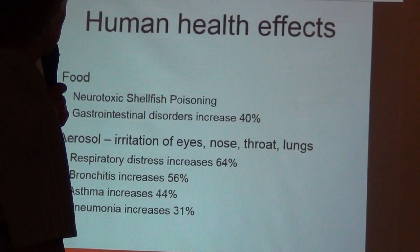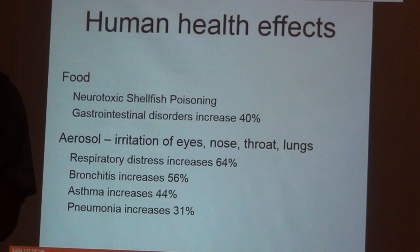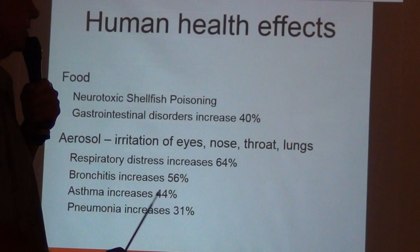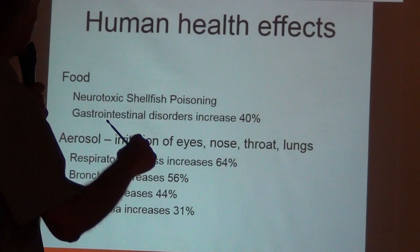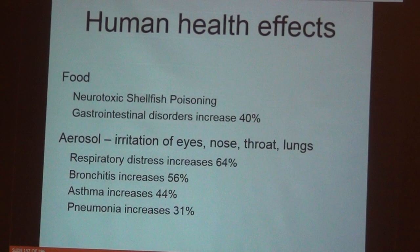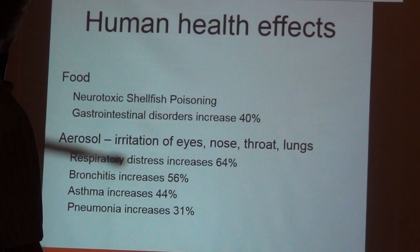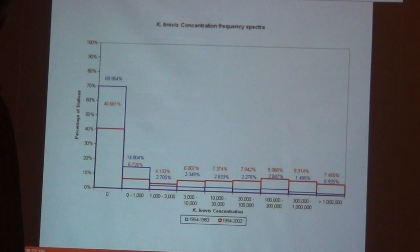What are the health effects of red tide? It's called neurotoxic shellfish poisoning because if you ate the shellfish you would get very sick, though that happens very rarely now because the state does a good job of shutting down shellfish harvesting when there's red tide around. If you look at hospital records during times of red tide, you see about a 40% increase in people going to the hospital for gastrointestinal disorders. The major effect these days is that the toxin gets into the air as an aerosol — it irritates your eyes, nose, throat, and lungs. Hospital records show about a 50% increase in people going to the hospital for various types of respiratory distress.